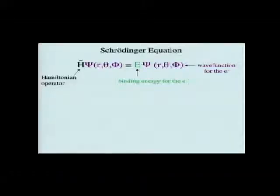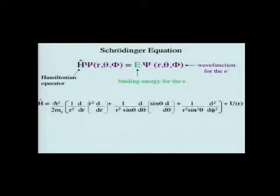In terms of the Schrödinger equation, we now can write it in terms of our polar coordinates here. So, we have the operation on the wave function in terms of r, θ, and φ. And remember, this E is just our binding energy for the electron. And we get back out this wave function.